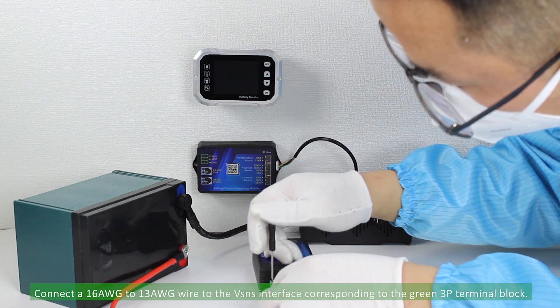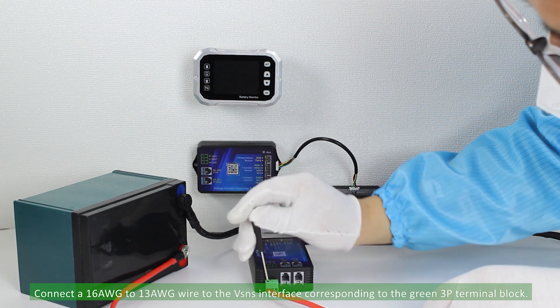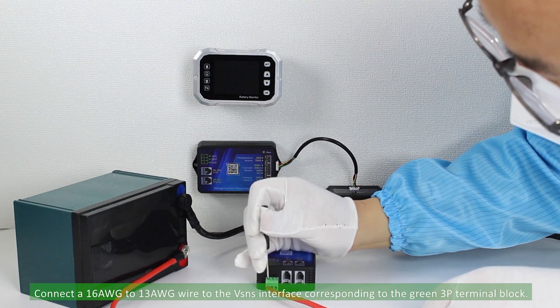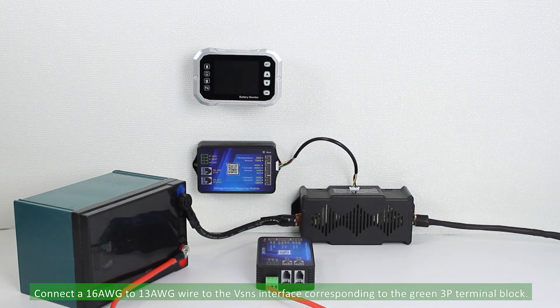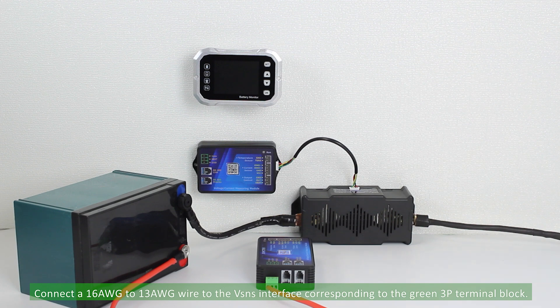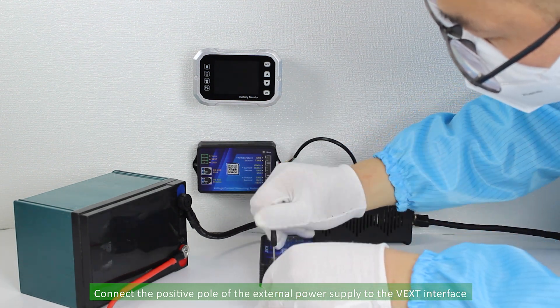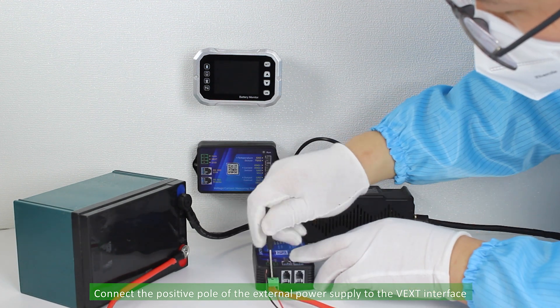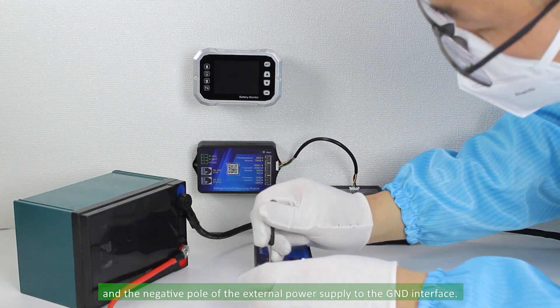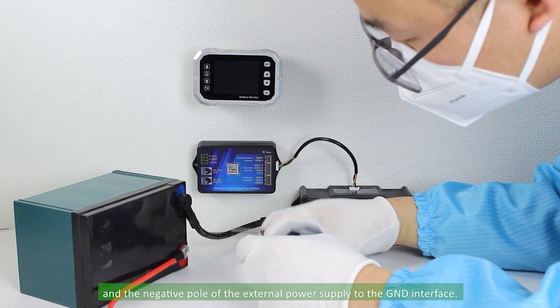Connect a 16 AWG to 13 AWG wire to the VSNS interface corresponding to the green 3P terminal block. Connect the positive pole of the external power supply to the VEXT interface, and the negative pole to the GND interface.